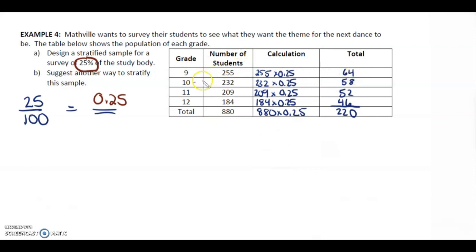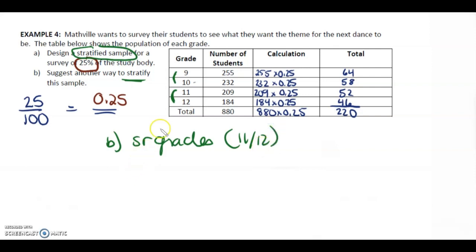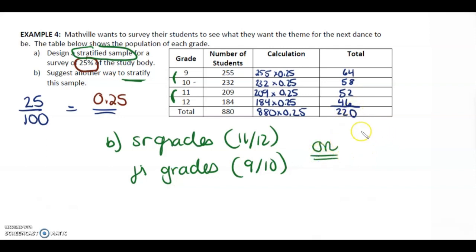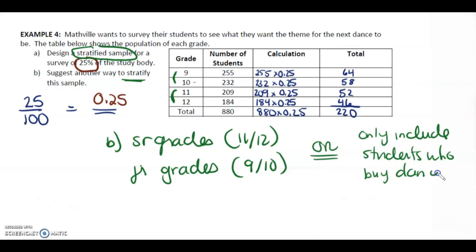To summarize: grade 9 we survey 64 people, grade 10 is 58, grade 11 is 52, and grade 12 is 46 people — that's a stratified sample. Another way to stratify this would be to group into senior grades (grade 11 and 12) and junior grades (grade 9 and 10). Or another way could be to only include students who buy dance tickets.